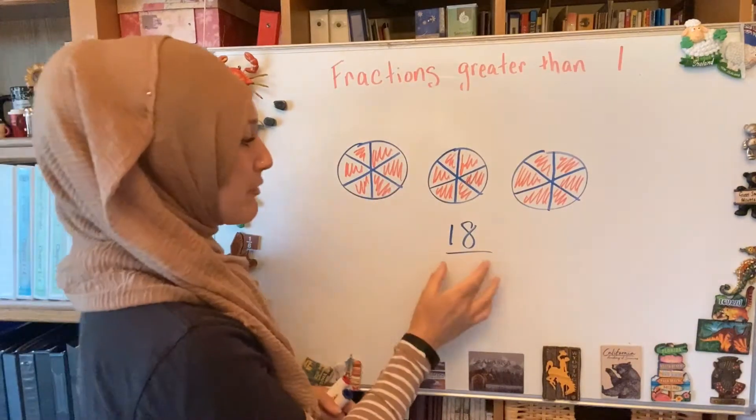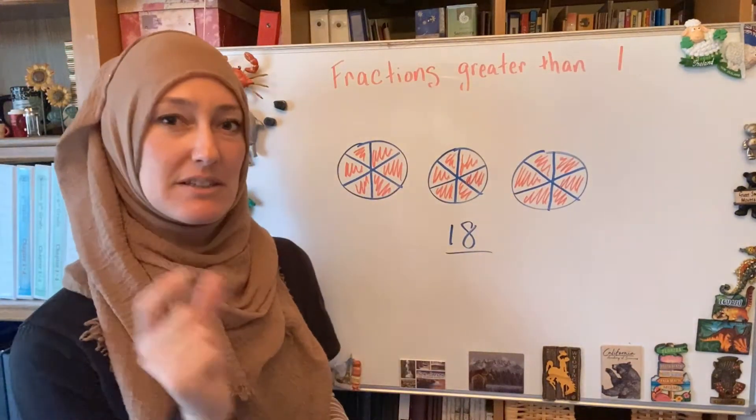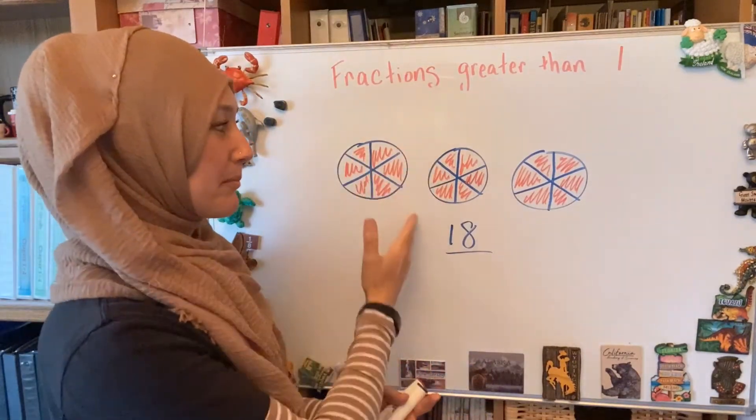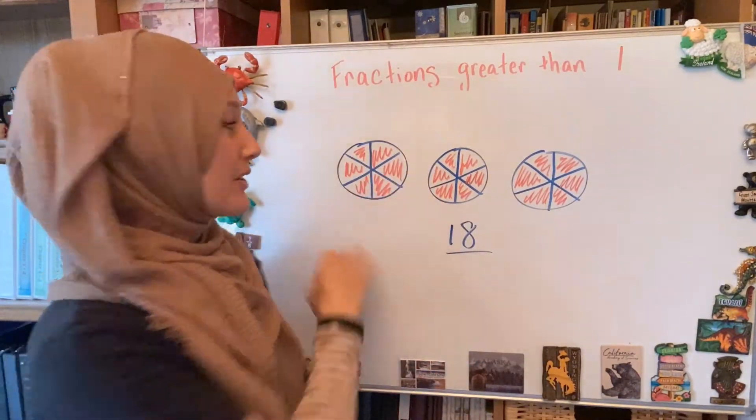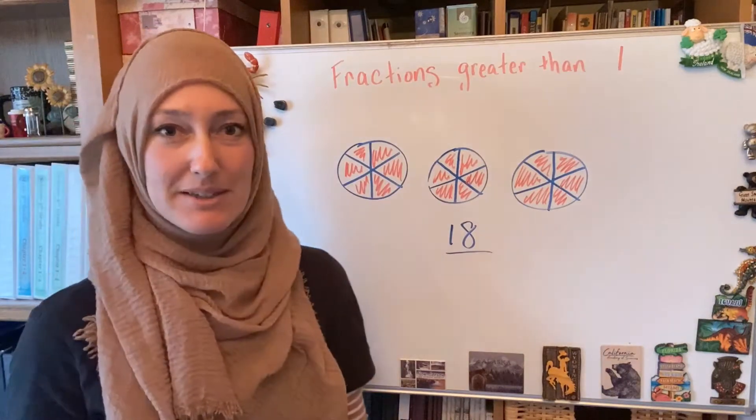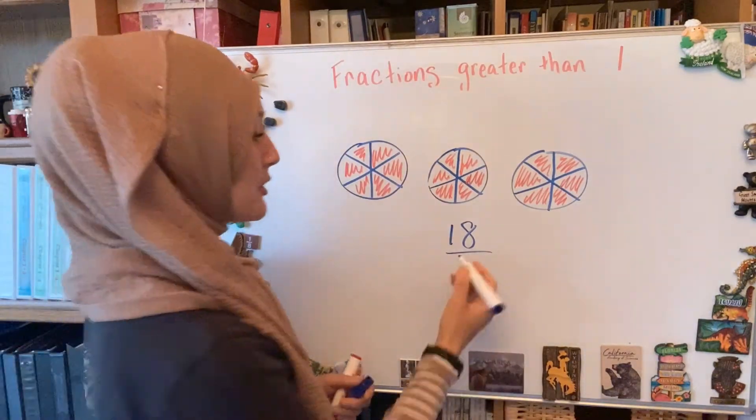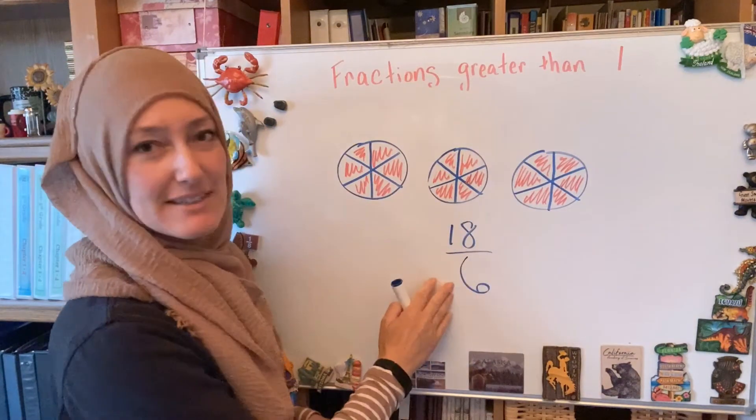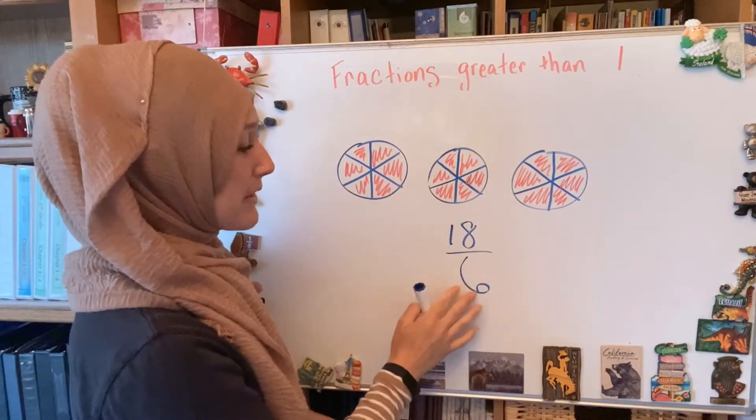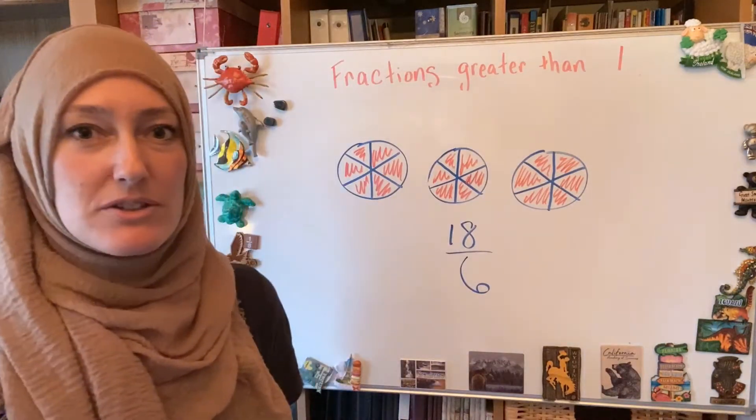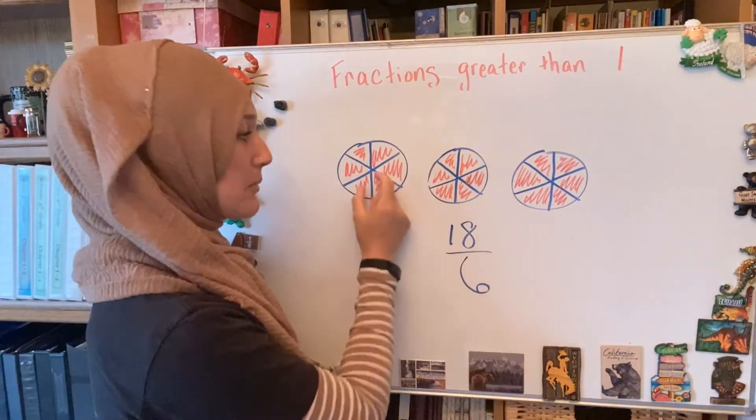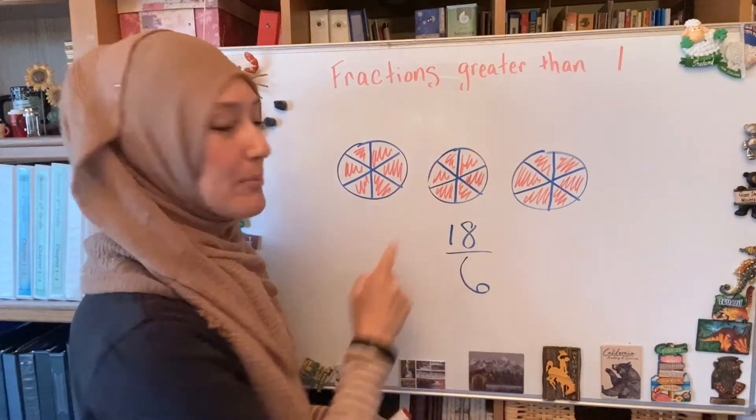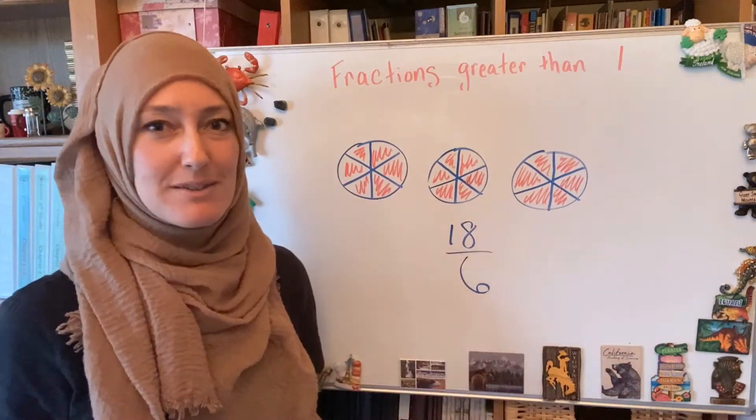So if I think of my denominator, my denominator is the size of the piece or how many pieces that one whole is cut into. So since it is cut into six pieces, we call that a sixth. So we would say that we have 18 sixth-sized pieces. So that's why this denominator is really important to know that we always go back and we say, what is the size of that piece? That's how we name it. And the top number is how many of those pieces do we have?